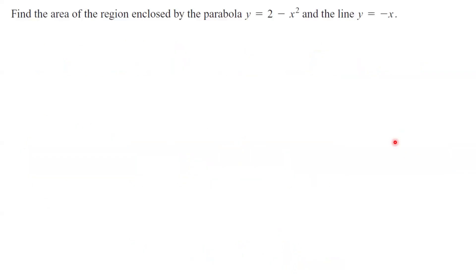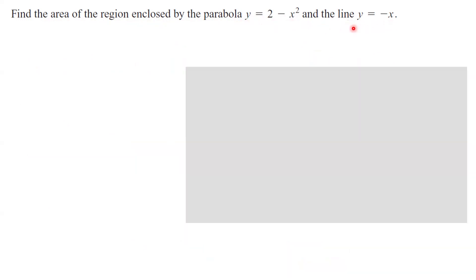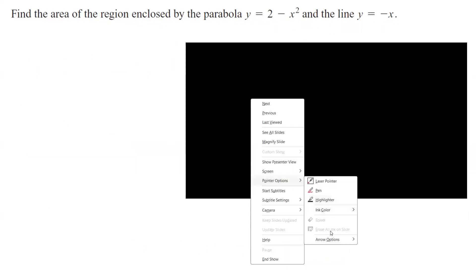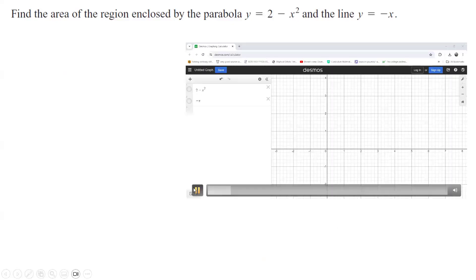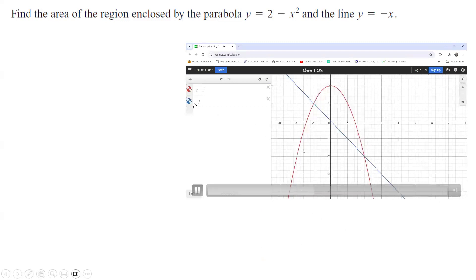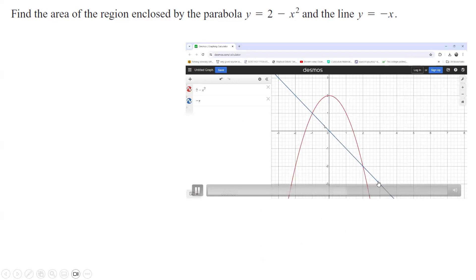Let's take a look at this example. The question says find the area or region enclosed by the parabola y equals 2 minus x squared and the line y equals minus x. You can visualize this using Desmos. First, let us graph 2 minus x squared, which is an upside-down parabola. And then you have a decreasing line y equals minus x. You want to know what is the area bounded between these two functions.